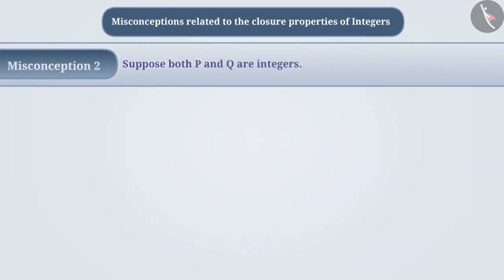Misconception 2. Suppose both P and Q are integers. So, will P minus Q also be an integer?